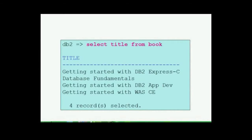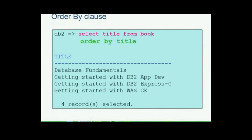Here is a simple result set from the query SELECT title FROM book. The order doesn't seem to be proper. Relational databases provide an option to sort the output. The ORDER BY clause is used in a query to sort the result set by a specified column.